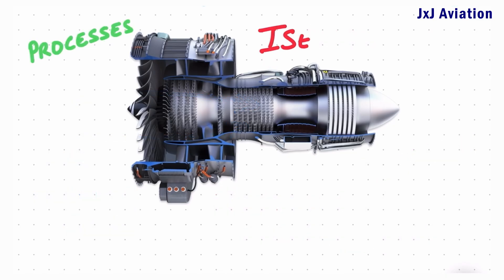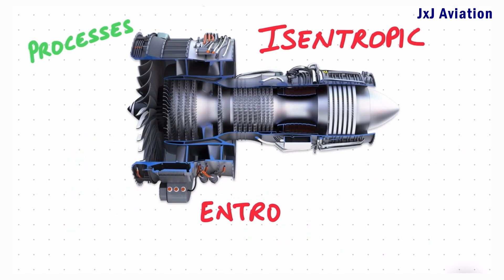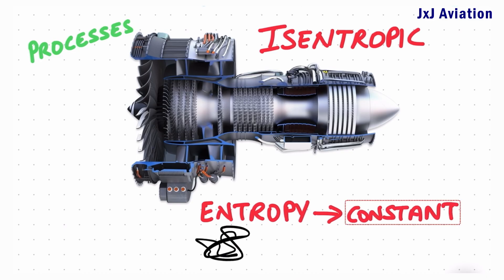Isentropic process. This is defined as the process where the entropy of a system remains constant. Entropy is defined as the degree of randomness or disorder in the system.